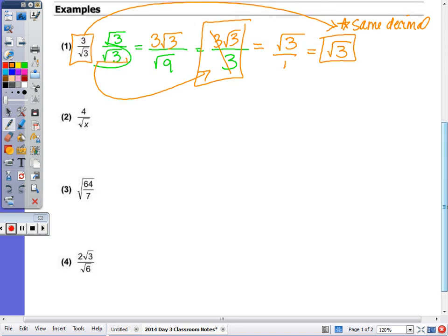Number 2, 4 over radical x. So to get rid of that radical x, which is irrational, I multiply by itself as radical x times radical x is x. And whatever you do to the denominator, you must do to the numerator to keep the fraction equivalent. So we get 4 radical x over x, which cannot be simplified.